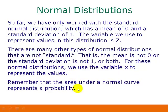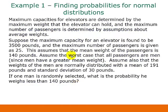Remember still that the area under a normal curve represents a probability. So here's an example of finding probabilities for normal distributions. Maximum capacities for elevators are determined by the maximum weight that the elevator can hold, and the maximum number of passengers is determined by assumptions about average weights. Suppose the maximum capacity for an elevator is found to be 3,500 pounds, and the maximum number of passengers is given as 25.